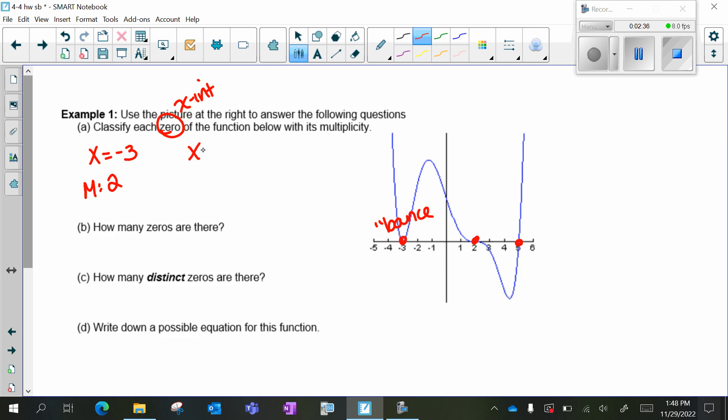The next is x = 2. It's a multiplicity of three because it's a squiggle. And my last is x = 5, which has a multiplicity of one because it passes straight through.